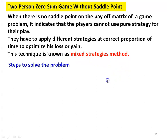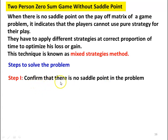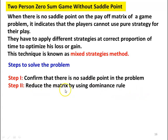In the mixed strategies method, the steps to solve the problem are: first, confirm that there is no saddle point. We have to find the minimax and maximin values. When they are equal, there is a saddle point; when they are not equal, there is no saddle point. Then reduce the matrix by using the dominance rule.